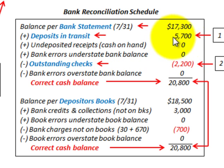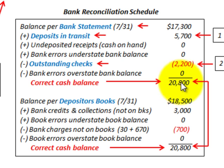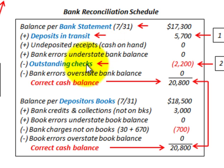Based on our net amount — summing, adding, and subtracting from the beginning cash balance per the bank statement of $17,300 — we're going to come up with a correct cash balance of $20,800. What we're going to be looking at in detail is how we calculate those deposits in transit and outstanding checks.